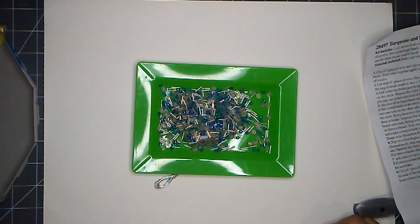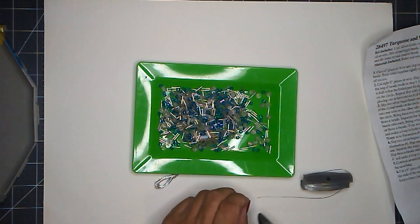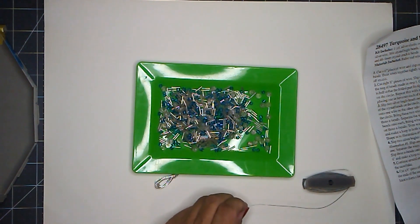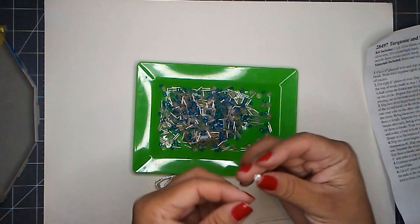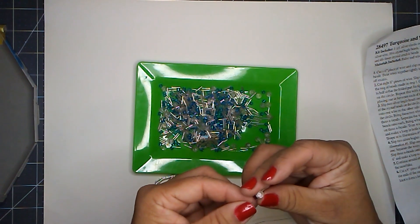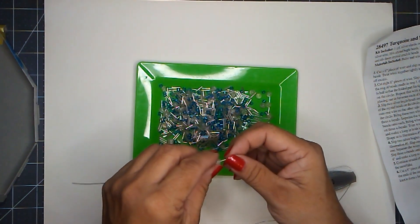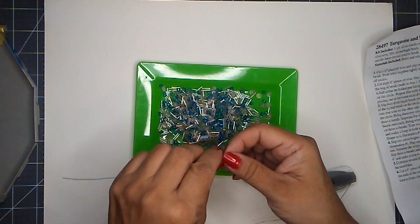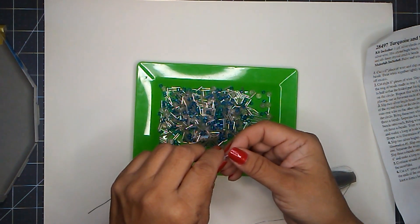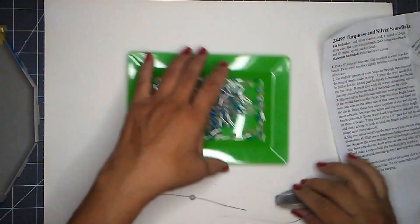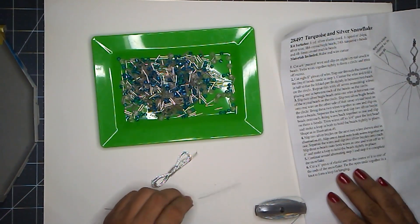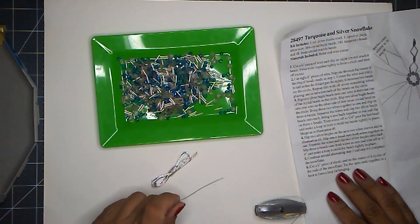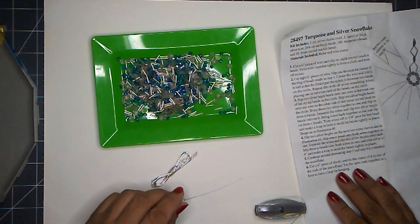I have my ruler here. I have a wire cutter, so cut six inches and slip on a crackle bead. Twist wire together tightly to form a circle and trim off excess. I probably should read the rest of this. Step two, cut eight inch piece of wire, slip one through the center of the ring of beads made in step one, center the wire and fold in half so that the folded part fits snugly in between the two beads on the circle.